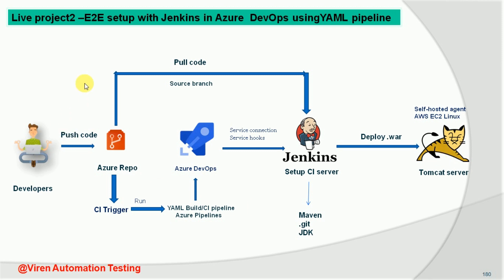So this is the whole process. I am going to explain it step by step in every video, and you will definitely understand how to deploy WAR files using Jenkins to the Tomcat server and how to integrate Azure DevOps with Jenkins in a real-time project system.